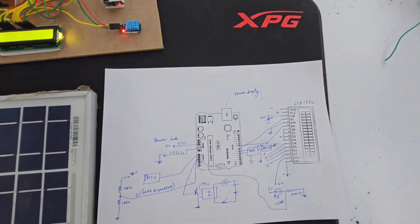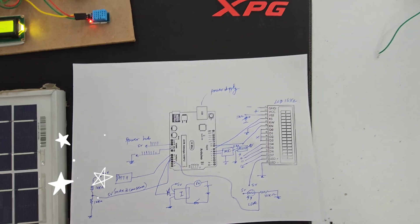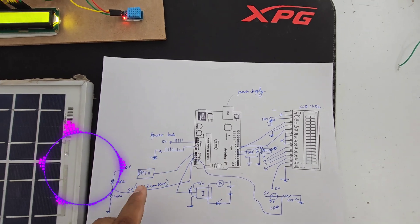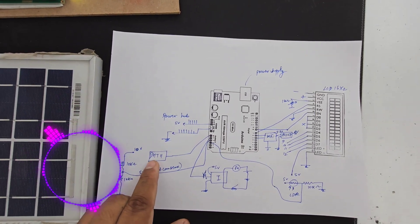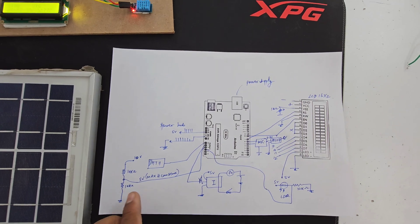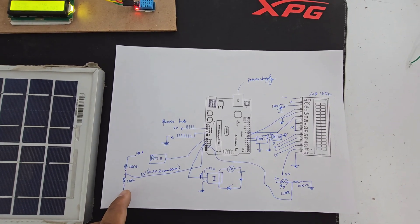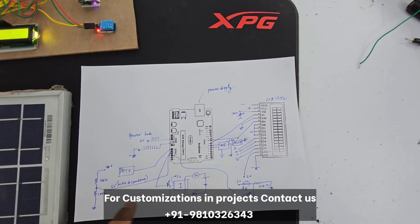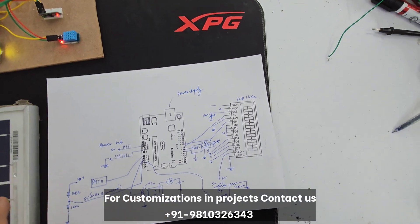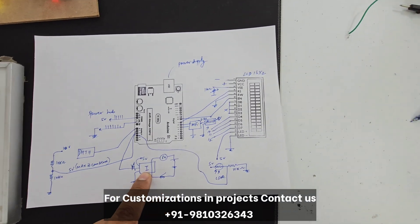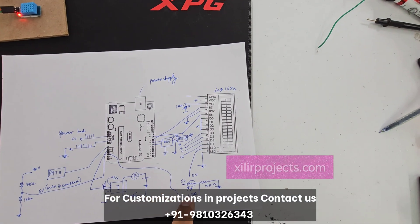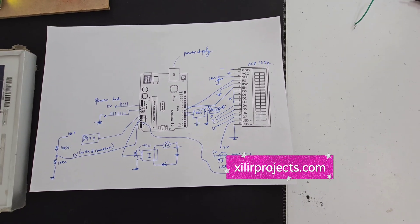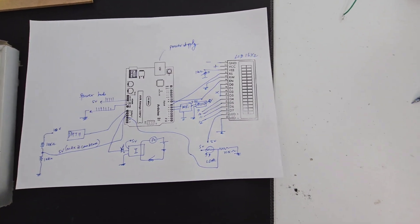This is the circuit diagram. Pin A0 is connected with DHT11. We have a voltage divider circuit used for making a voltmeter using Arduino. We have a current sensor here, and we have an LDR circuit which is detecting the light — LDR means light dependent resistance.